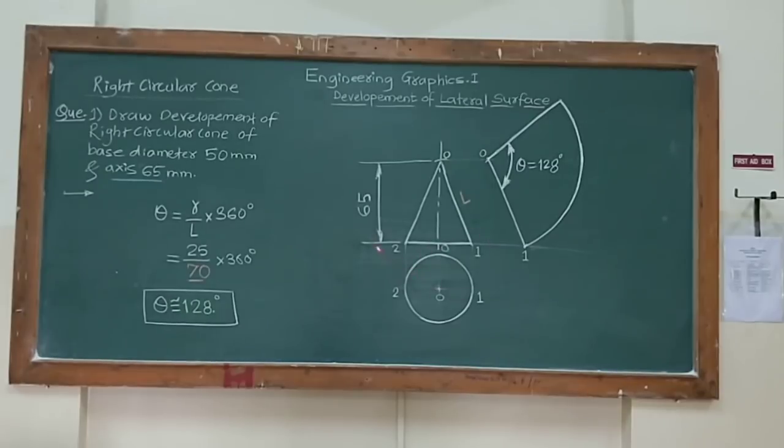So there will be two variations in this problem, development of cone. Either axis height is given to you, or directly generator length. If in the problem, if generator length is given.